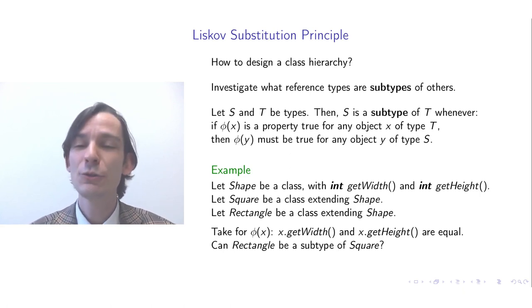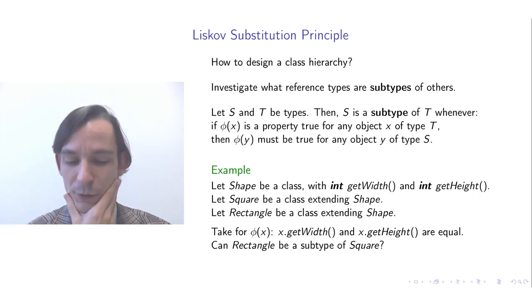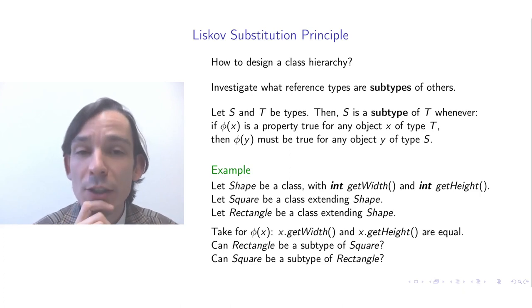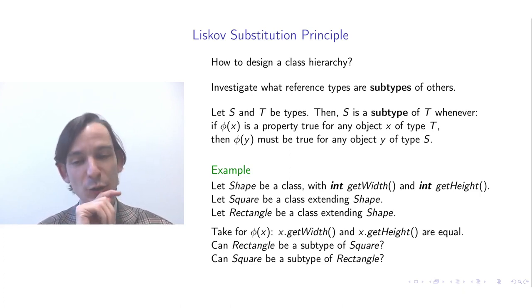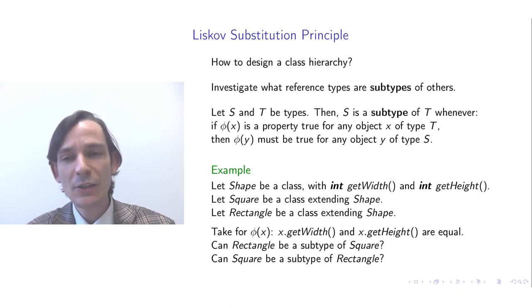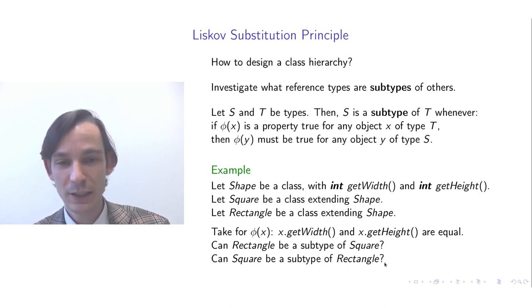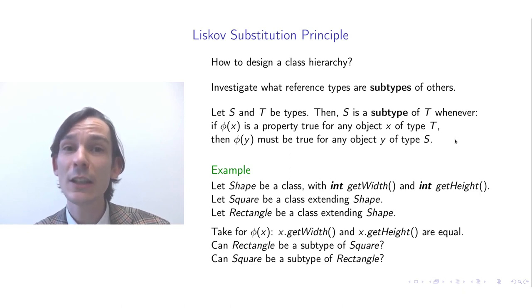You could also ask the reverse question: is it possible that Square is a subtype of Rectangle? In that case you should ask yourself whether every property true for rectangles is also true for squares. I'll let you think about that question.